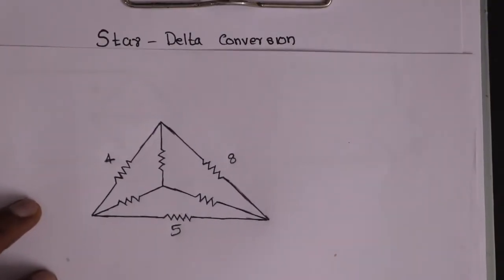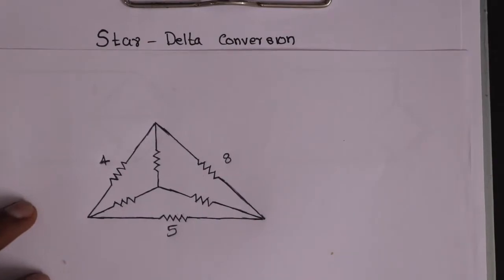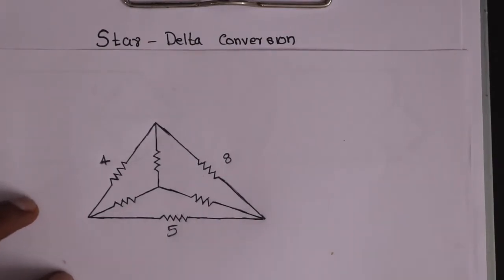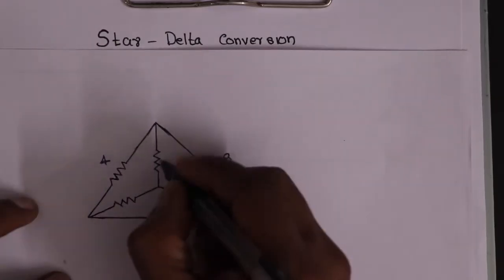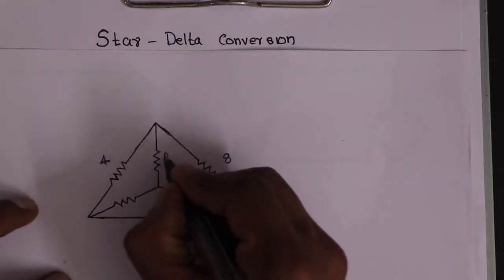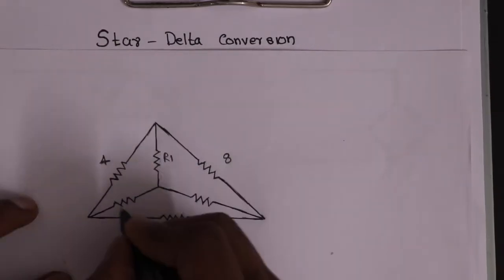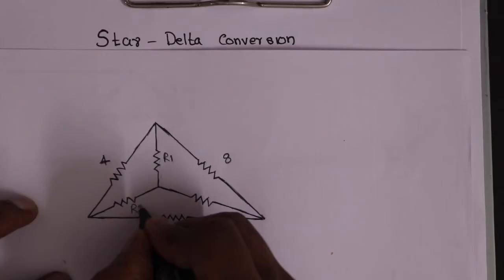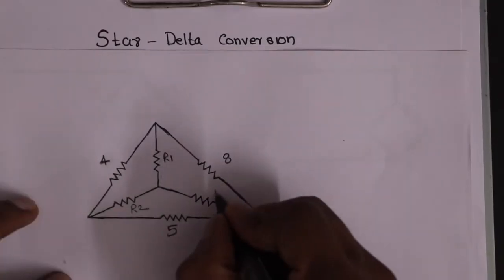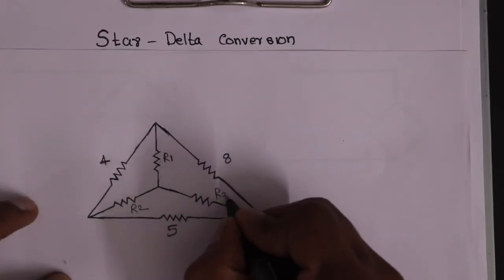We will show the circuit in this video. I will show you the link in the description. The resistances are R1, R2, and R3.